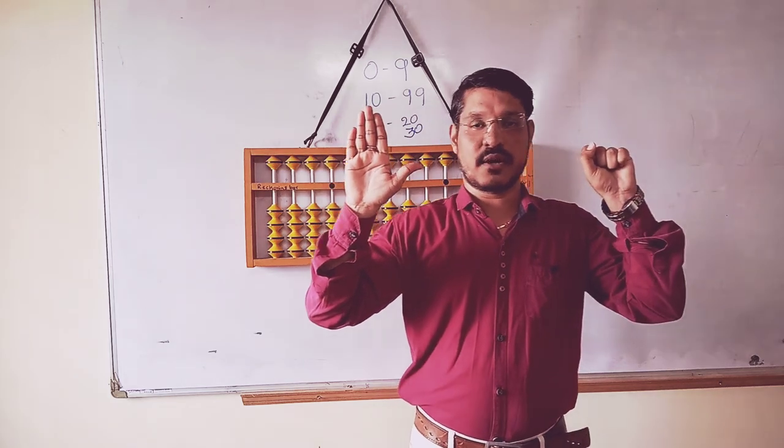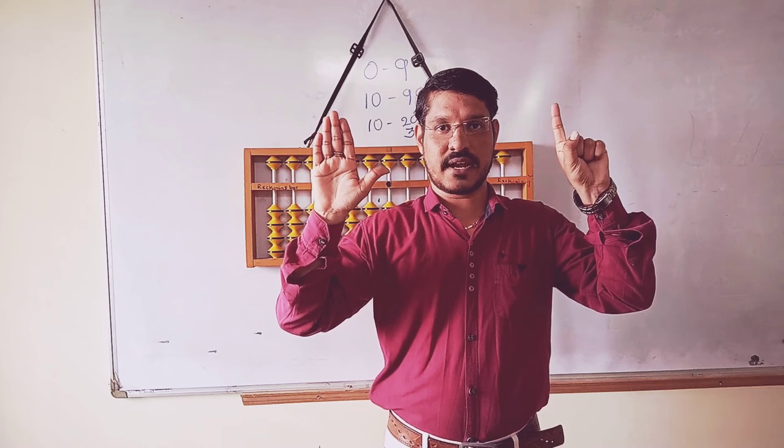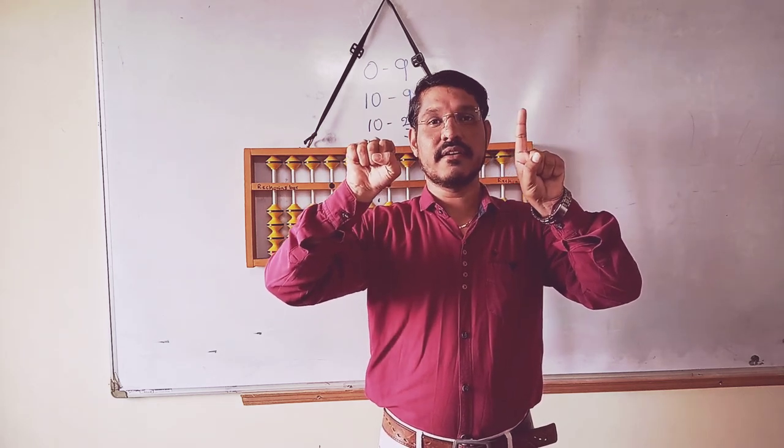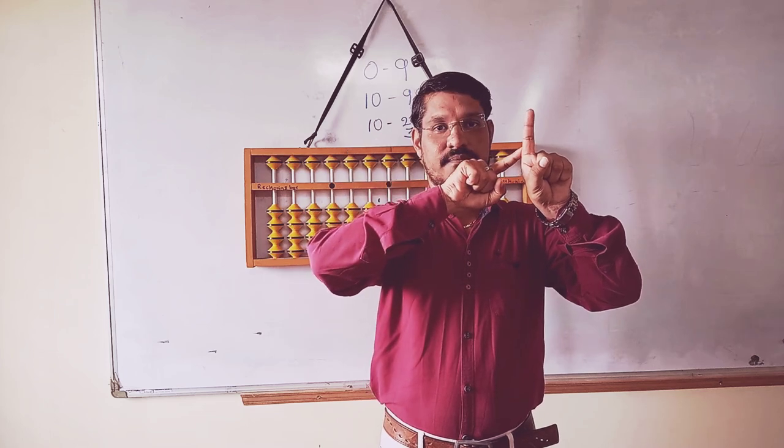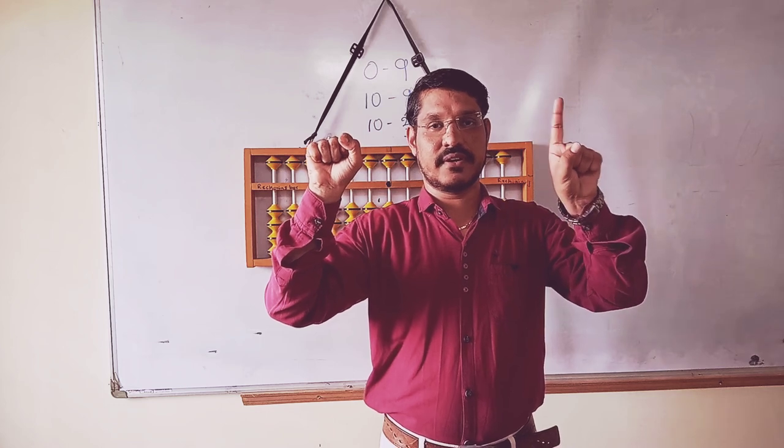The same thing, if you use one more hand, you can calculate 0 to 99. How is it possible? Just see here. Just close both hands. It is 0, 0 value. Value 1, number 1, like this.